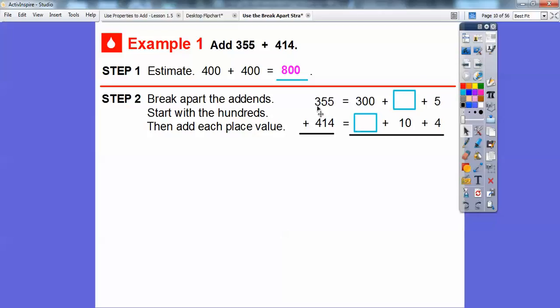Here's the hundreds. This is 300, this is 5 tens, so this would be 50, and then this would be 5. So this is going to be 300 plus 50 plus 5. 414 is 400 plus the 10 and then plus the 4 right there. So we'll put 400 right there.